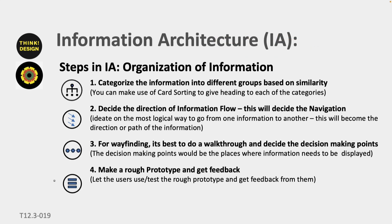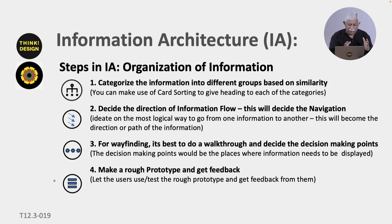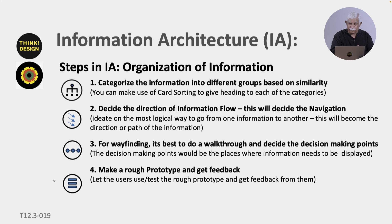If you look at the steps in organizing information: first, categorize the information into different groups based on similarities so they all come under certain groups. Then decide how it should flow — how will you determine the navigation, what should come next. For wayfinding applications, it is best to do a walk-through of that place and identify the points where decisions need to be made, because those are the points where you need information or signage. Then make a rough paper prototype, get feedback from users, and see if it works.